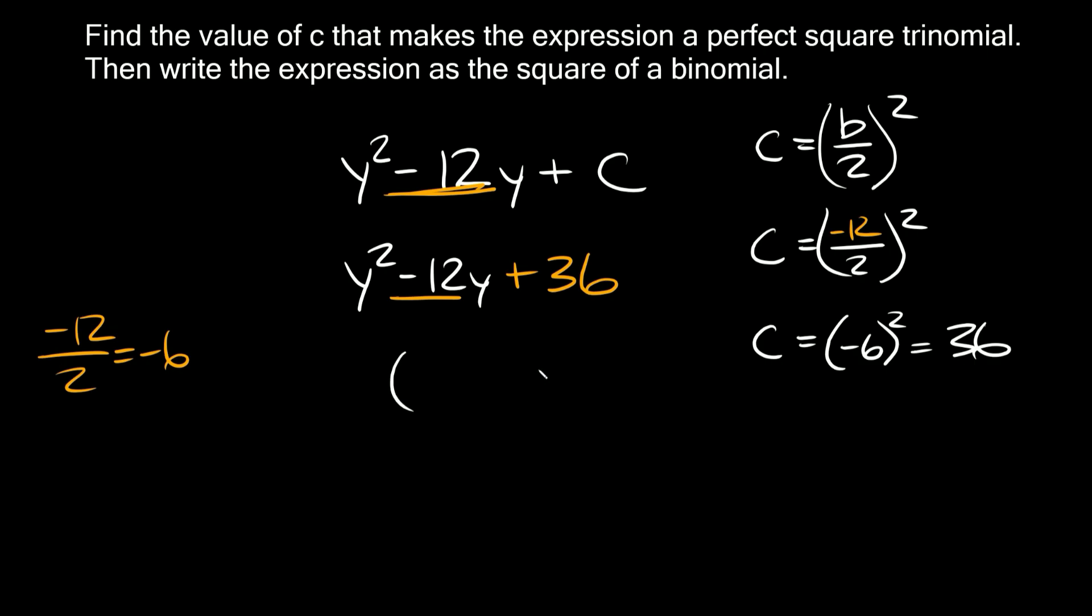Then we're going to put this in a set of parentheses. In this case our variable is a y so we're going to put a y there and then we have a negative 6 right there, so we're going to say minus 6 and then this is squared. So then in this case y squared minus 12y plus 36 is the exact same thing, or it's equal to y minus 6 in parentheses squared.